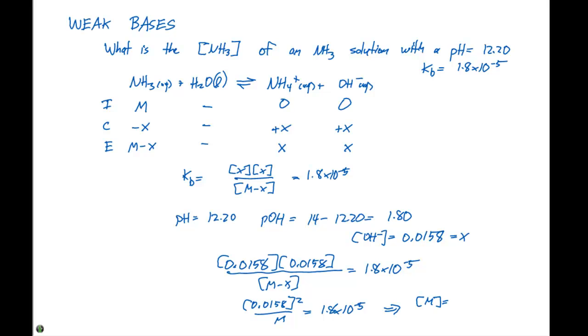We're gonna get 13.95, which here is a very large number. So we can assume that 13.95 minus x is roughly gonna equal 13.95. And our concentration here of M is going to be 14 if we round to two significant figures.